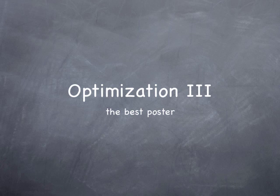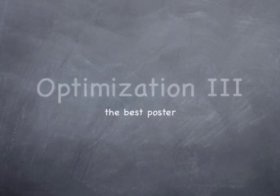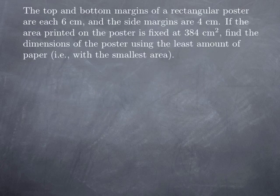Continuing our series of optimization problems, this time we want to find the best possible poster under certain constraints. More specifically, we're trying to make the best possible rectangular poster that has top and bottom margins of 6 centimeters each and side margins of 4 centimeters each. The printed area of the poster is fixed at 384 square centimeters, and we want to find the dimensions of the poster using the least amount of paper, in other words with the smallest possible area.